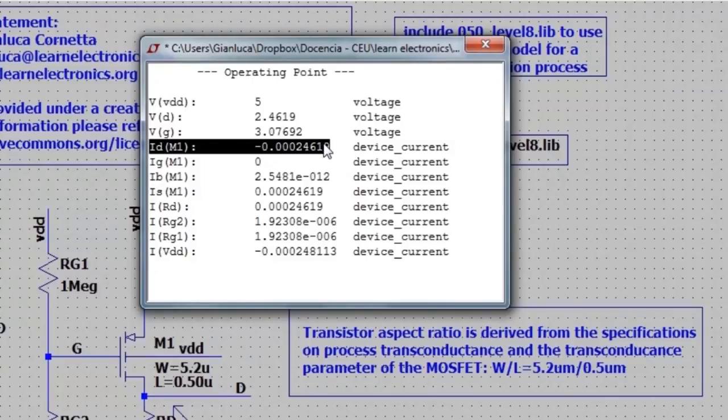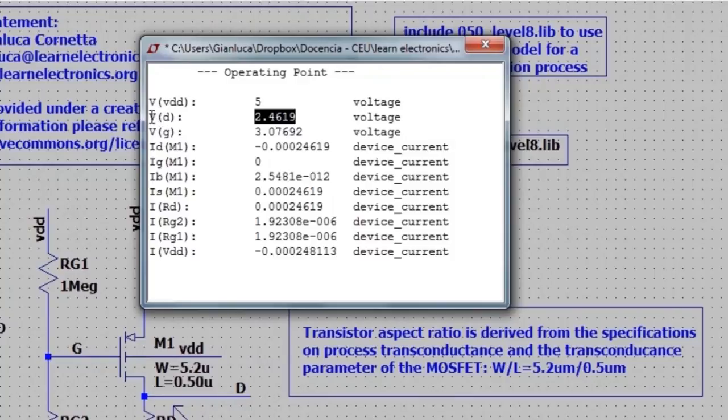Much closer to my target value, and so is the drain voltage that is now 2.46 volts.